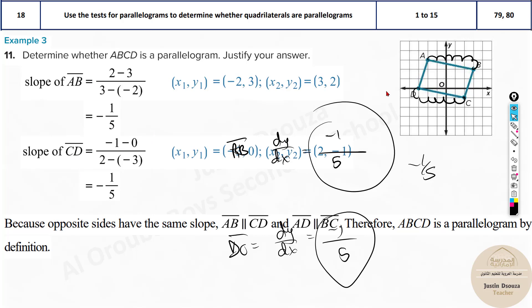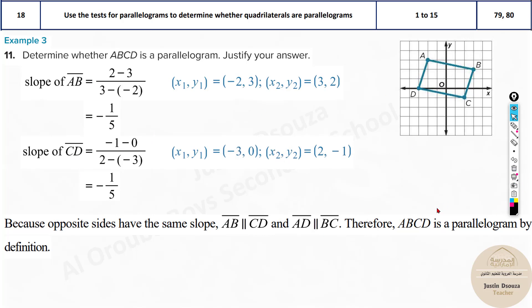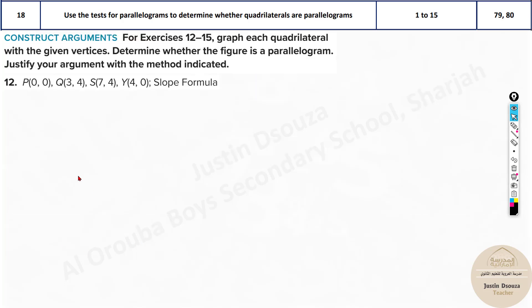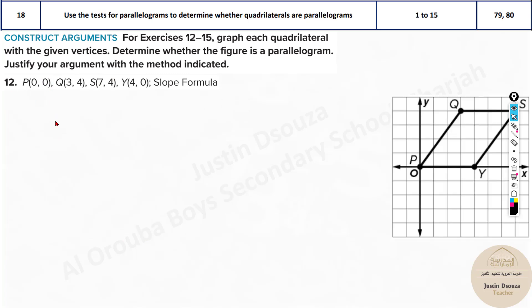If the slopes are not the same, then it's not parallel and not a parallelogram. Here all four sides are parallel in pairs, and hence ABCD is a parallelogram by definition. Here they have just given you the x, y coordinates with no graph, so you just apply the formula directly.